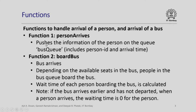Now let us look at the additional functions we have to write, over and above the standard template library queue functions. The functions we will need handle: (a) the arrival of a person, and (b) the arrival of a bus. Person arrives is a very simple function — all we need to do is push the information of the person onto the bus queue, including person ID and arrival time. Boarding the bus is slightly more complex, handling bus arrival, seating, and wait time calculation.